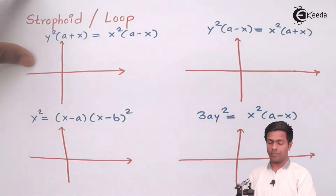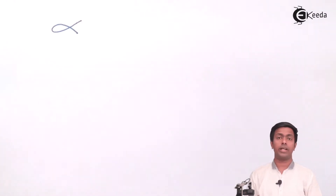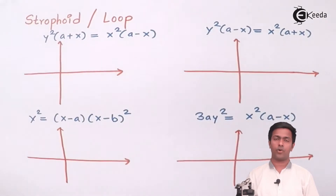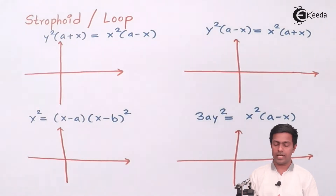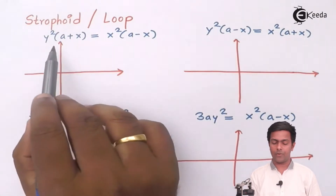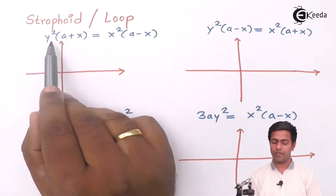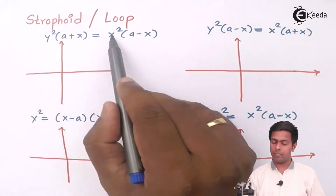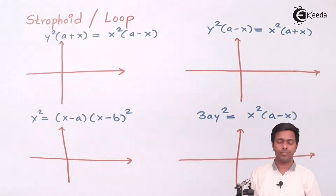As the name is loop or strophoid, let me tell you how the loop looks. We all know that a loop has a shape like this — whenever we see this type of shape we call it a loop. In this curve we are going to see the same type of loop. Always remember that the equation of the strophoid loop will have even powers of y, even powers of x, and certain linear terms in x.